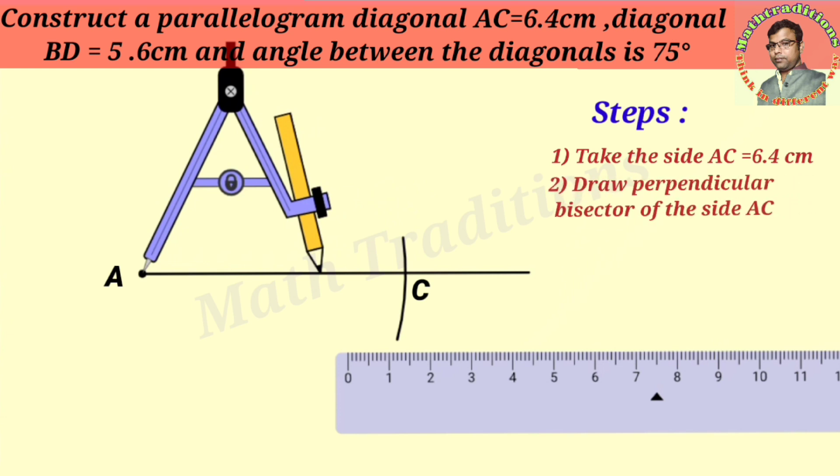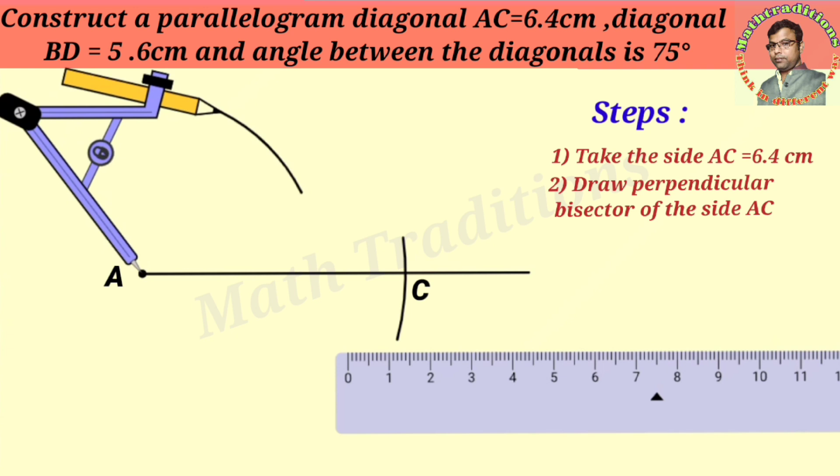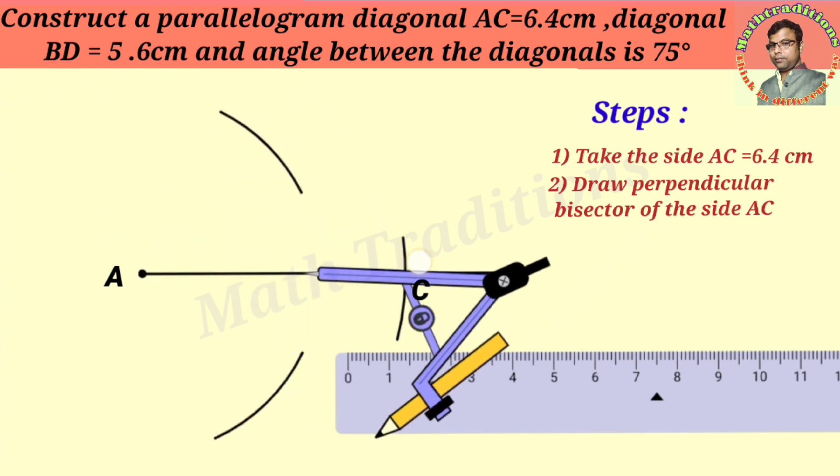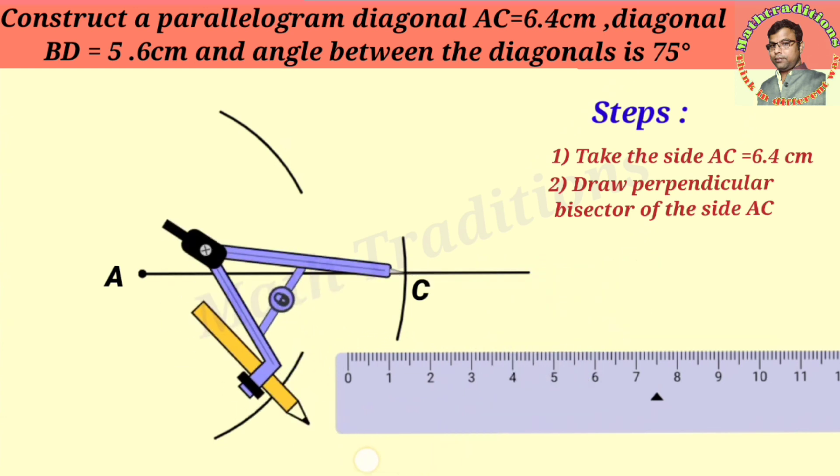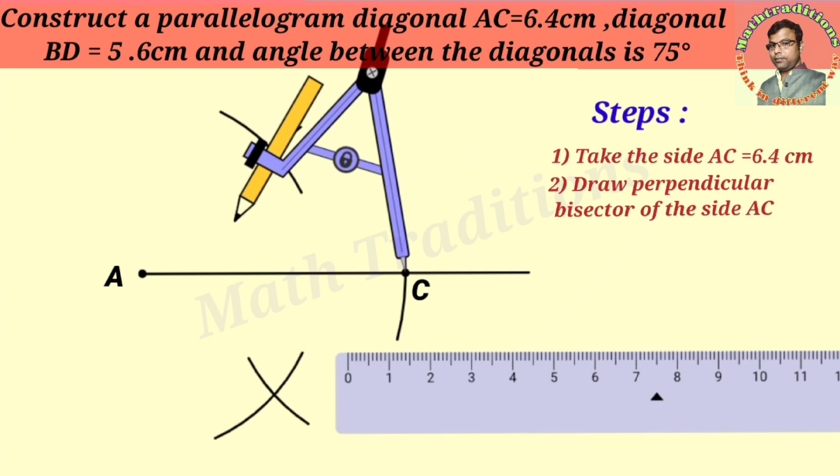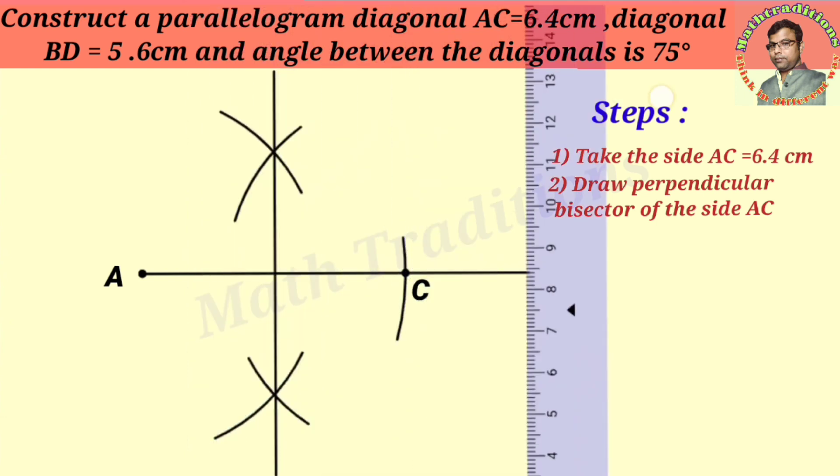Next, we will bisect AC because, as we know, the diagonals of a parallelogram bisect each other. Therefore, we will get the midpoint of the diagonals. After bisecting diagonal AC, we have obtained the midpoint O of AC.